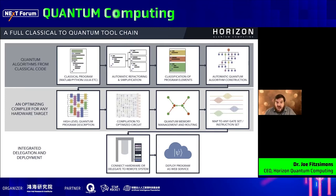The second layer takes that quantum algorithm and compiles it down into a concrete quantum circuit, mapping it to the constraints of the hardware for the particular processor we're deploying on — connectivity constraints, imperfections in the couplings and qubits on the device, and the instruction set of the device. The final layer is concerned with deployment: wrapping everything up and deploying it so that it lives in the cloud at some URL as an API that the user can access with their input without ever needing to worry about the quantum processing behind it.